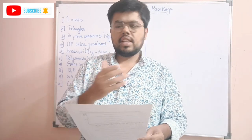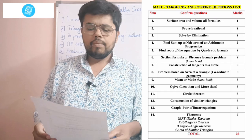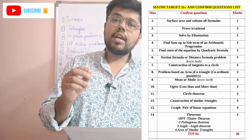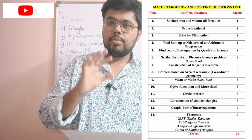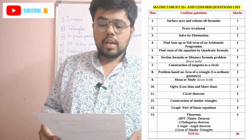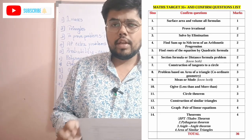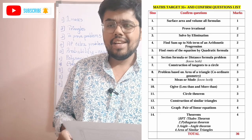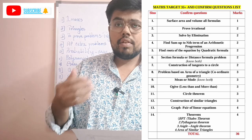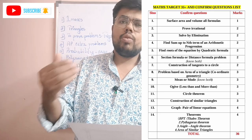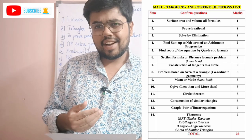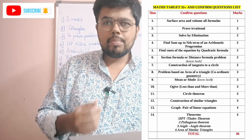The passing marks checklist — I am putting it on the screen. First, you should know all the formulas of surface area and volume, including the Frustum formulas. That will definitely yield you two marks. Next, prove irrational problems — for example, prove that 5 plus root 3 is irrational, or 2 plus root 5 is irrational. This is a definite question seen in past 2-3 years of model papers for two marks.